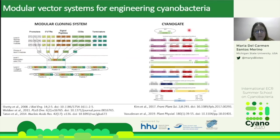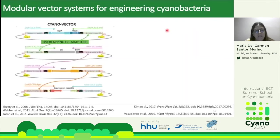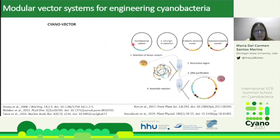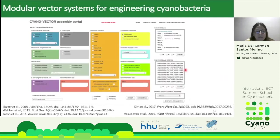A similar modular cloning system developed for cyanobacteria is called CyanoGate. Another system, CyanoVector, stores different parts in separate plasmids containing overlapping GC adapters upstream and downstream. Once parts are selected, they are digested, purified, combined in a tube, and assembled. CyanoVector includes an assembly portal where we can choose parts to include in our final vector: cyanobacterial replication origins, antibiotic markers, promoters, E. coli origin of replication, and more.